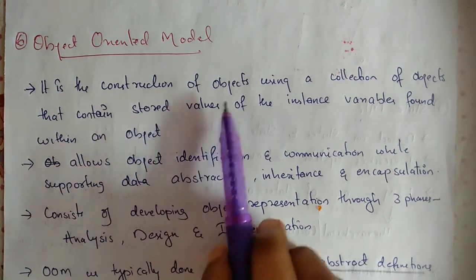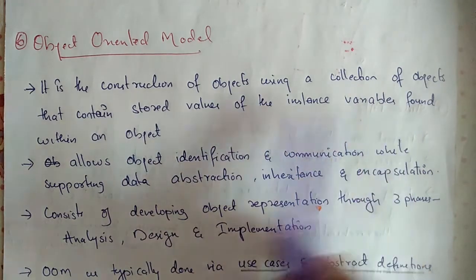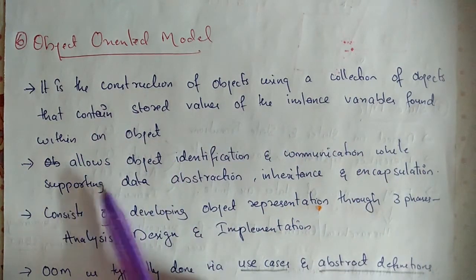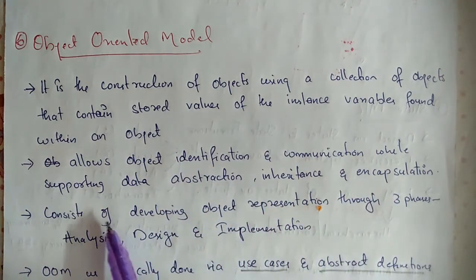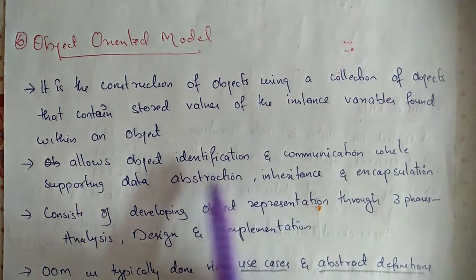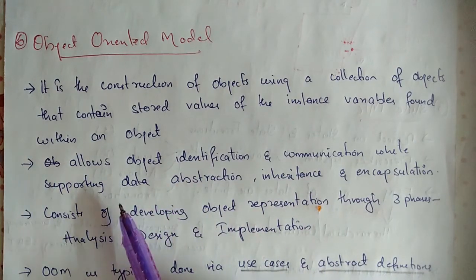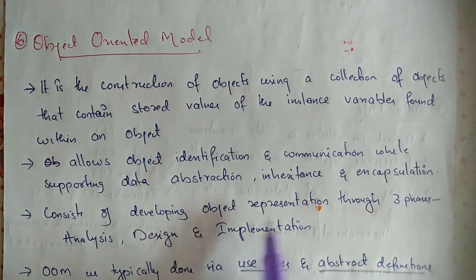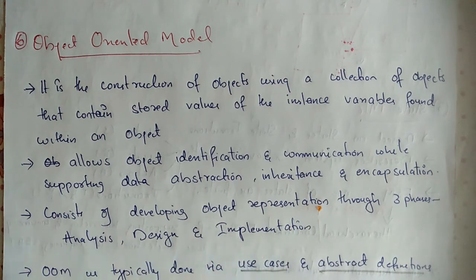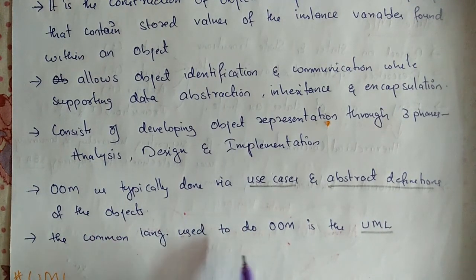Next is the object-oriented model. It is a construction of objects using a collection of objects containing stored values of instance variables. It allows object identification and communication while supporting data abstraction, inheritance, and encapsulation. It consists of developing object representation through three phases: analysis, design, and implementation. Object-oriented modeling is typically done via use cases and extracting definitions of objects.